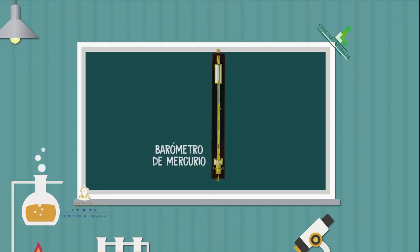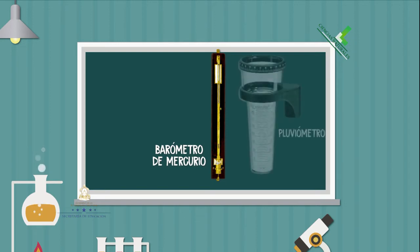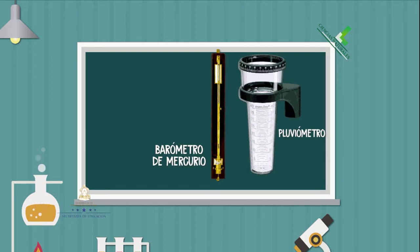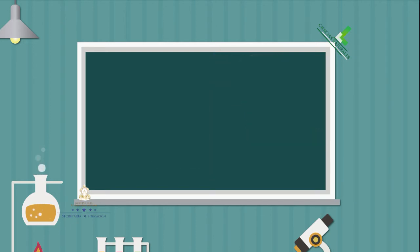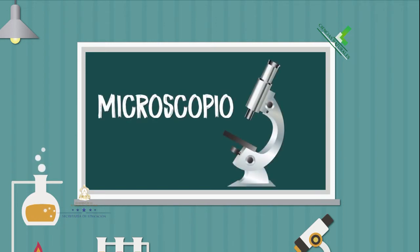El barómetro, que mide la presión atmosférica. Y el pluviómetro, que se emplea en las estaciones meteorológicas para la recogida y medición de la precipitación. No podemos olvidar el microscopio, que sirve para observar órganos muy pequeños que no se pueden mirar a simple vista. ¿Tienen microscopios en su centro educativo? ¡Espero que sí!